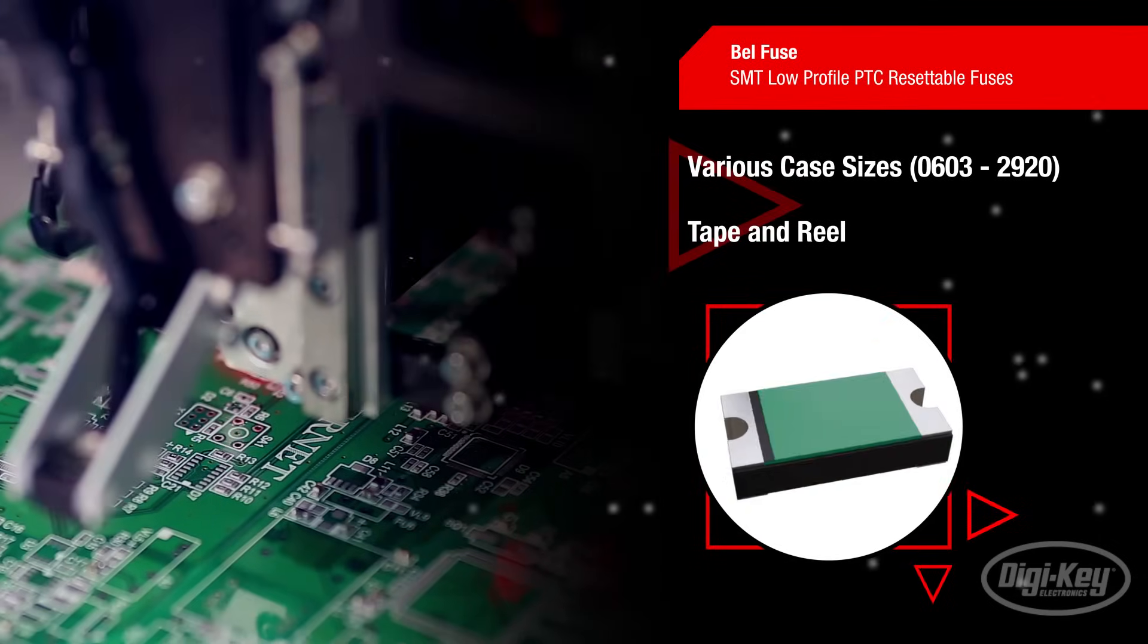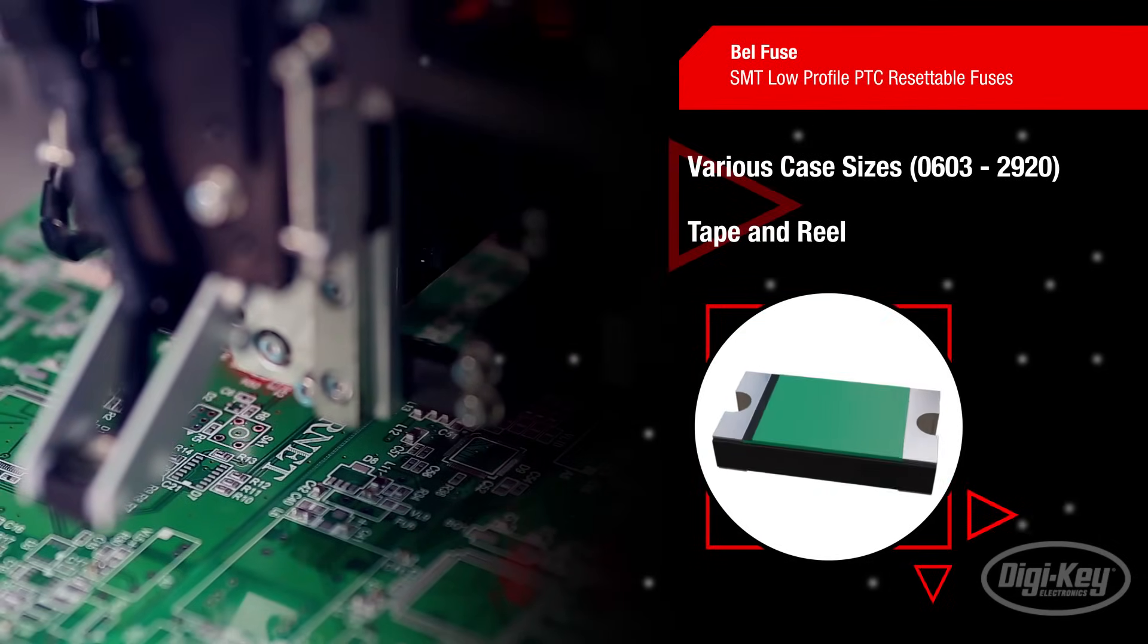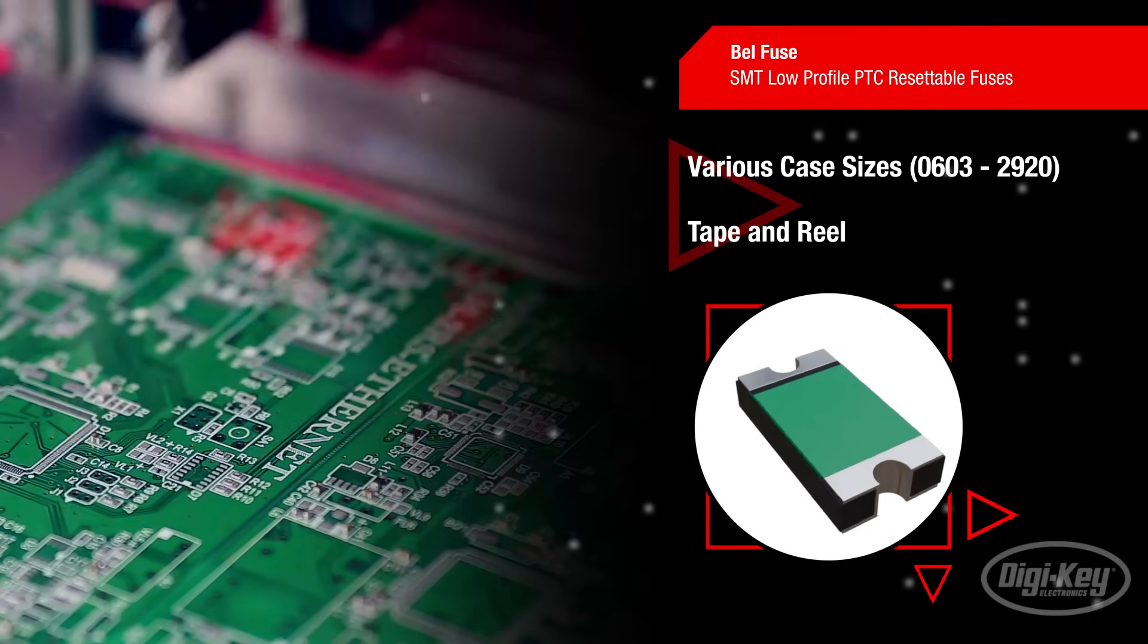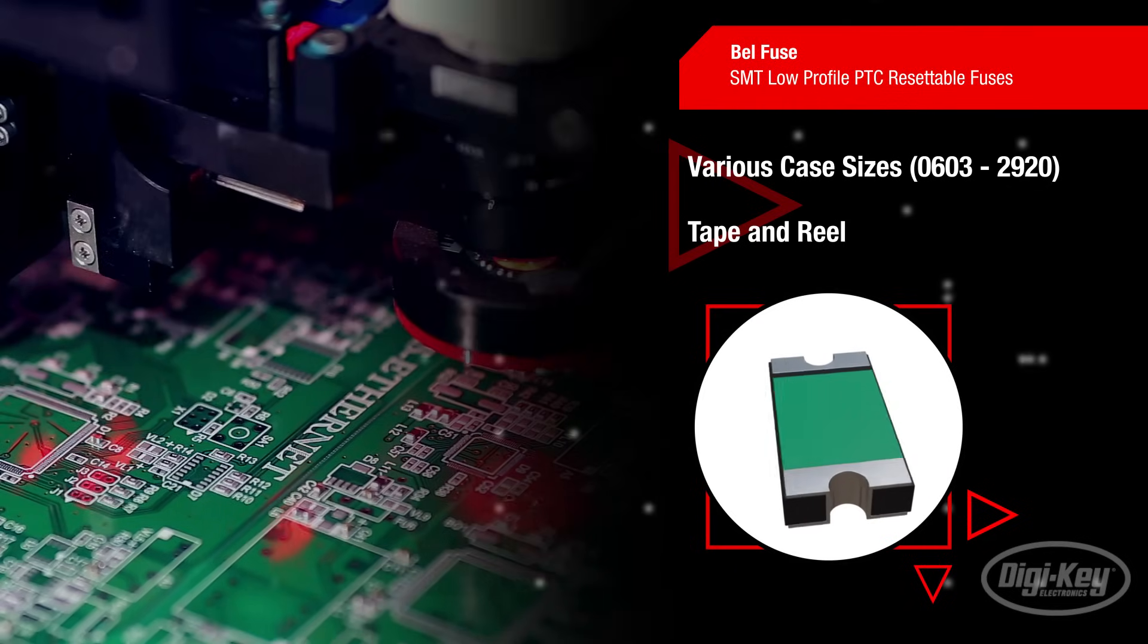These BellFuse surface mount devices come in various case sizes from 0603 to 2920, and come in tape-and-reel packaging for automated assembly.